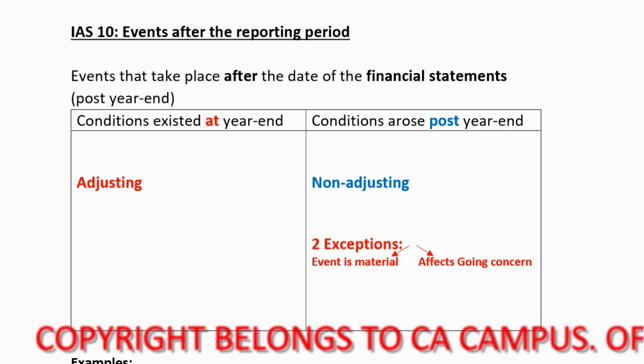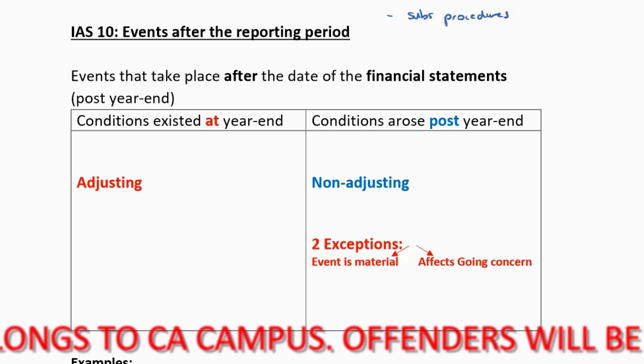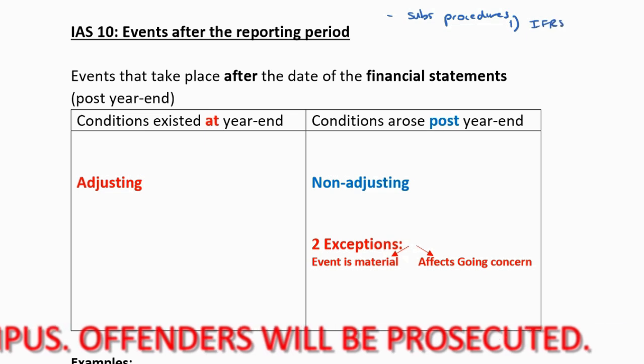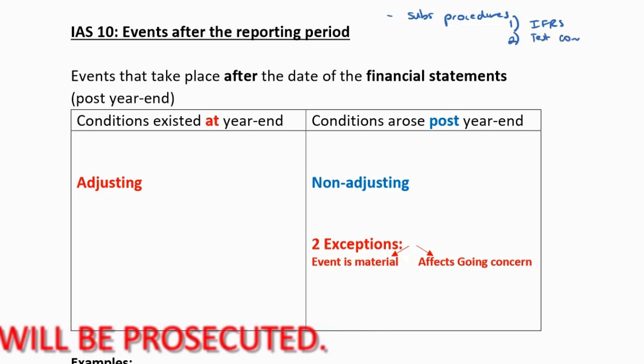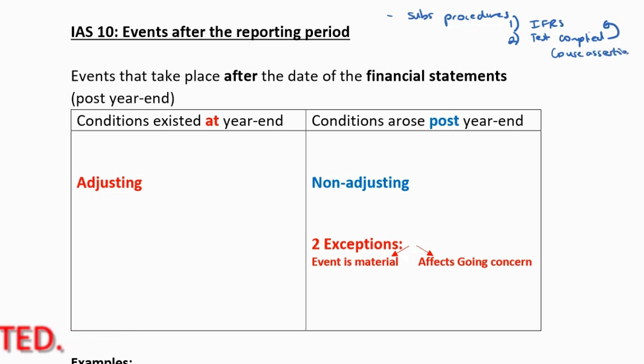I'm not doing anything different here. Think about when we looked at our substantive procedures for auditing any balance or class of transaction. The first thing we said we needed to do was consider what IFRS says, and then when I know what IFRS says, I need to go and test whether they have complied. In order to test compliance, I would use my assertions, because my assertions help me make sure I test all of the ways in which they might not comply — maybe understating or overstating, putting things in early or too late. The assertions help me make sure every way in which it could be misstated has been tested. But how do I know if it's misstated? Because they haven't complied with IFRS.